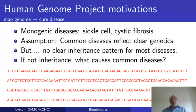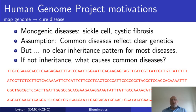It was hoped, and perhaps even assumed, that common diseases would also reflect clear genetics — probably not monogenic, but maybe di- or trigenic — and would give us a handle on how to treat these common diseases. These would include diabetes type 1 or type 2, hypertension with its number of subtypes, and schizophrenia, which also has multiple subtypes and enormous complexity.